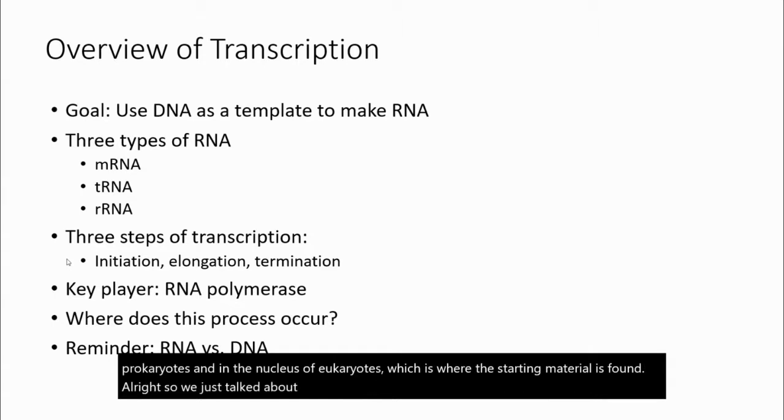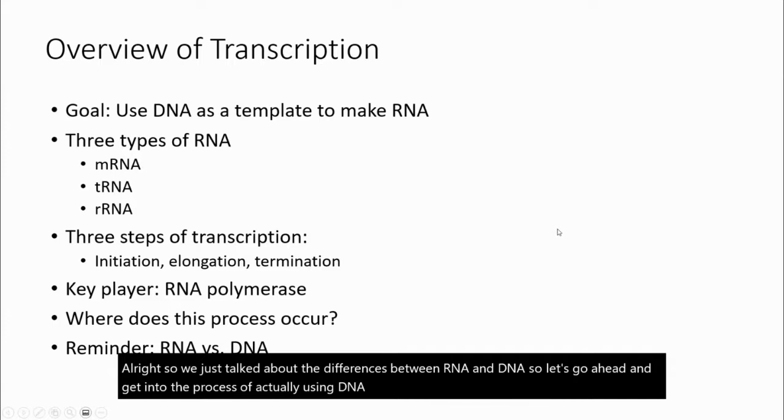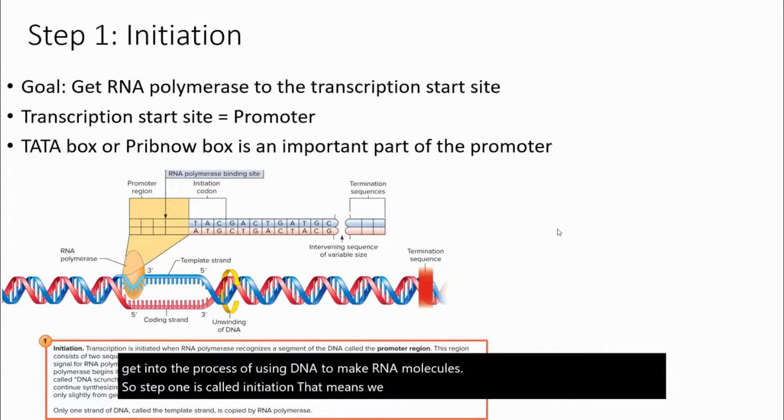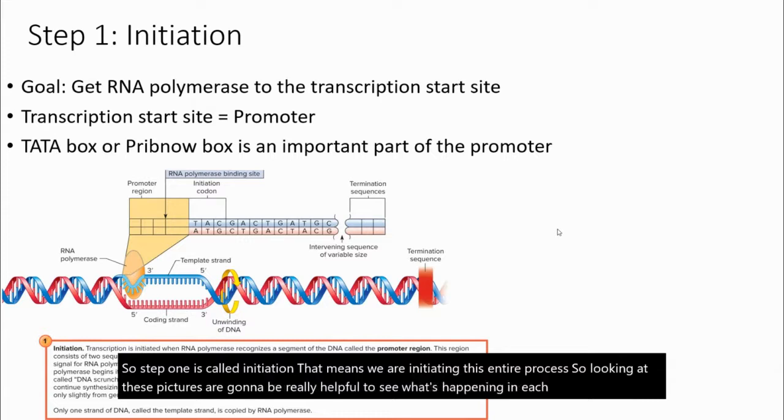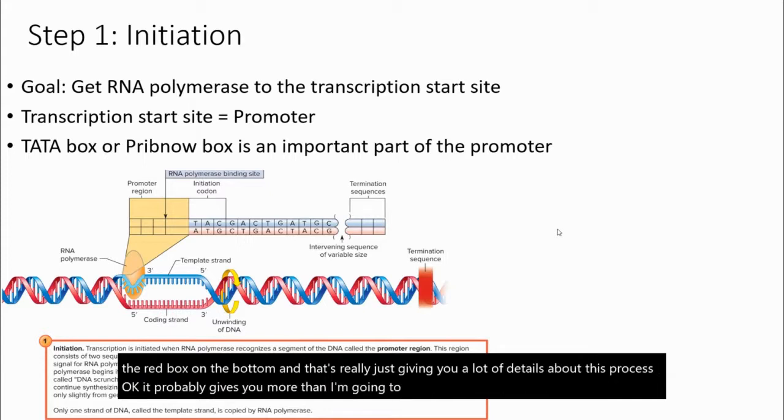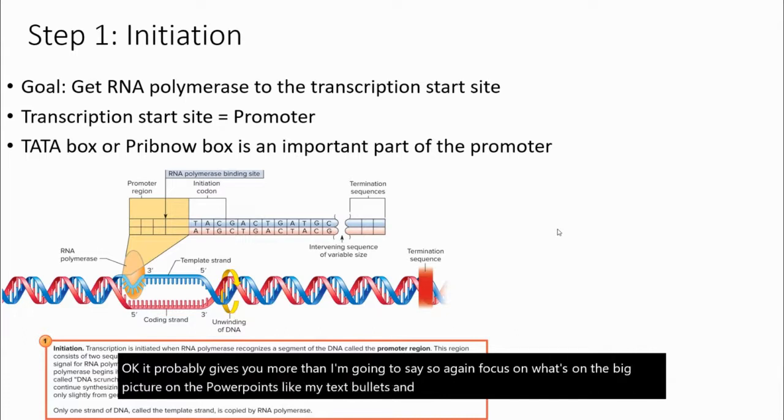We just talked about the differences between RNA and DNA. So let's go ahead and get into the process of actually using DNA to make RNA molecules. Step one is called initiation. That means we are initiating this entire process. Looking at these pictures is going to be really helpful to see what's happening in each step. There's text in the red box on the bottom, and that's really just giving you a lot of details about this process. It probably gives you more than I'm going to say. So focus on the big picture on the PowerPoints, like my text bullets, and what I'm going to talk about.